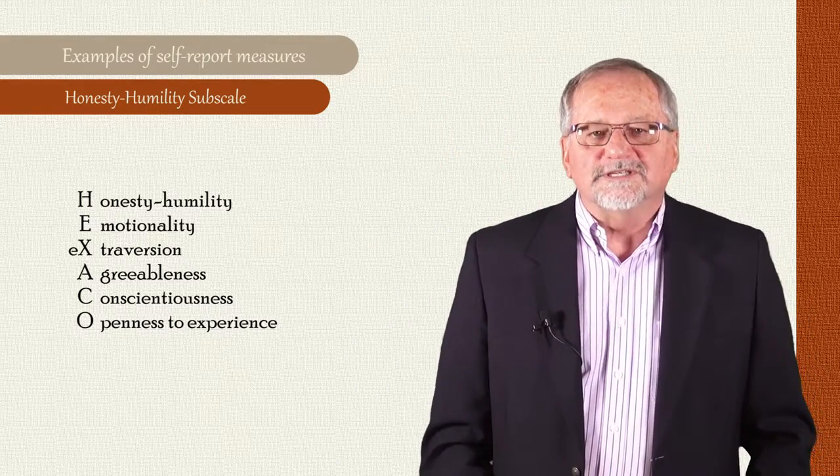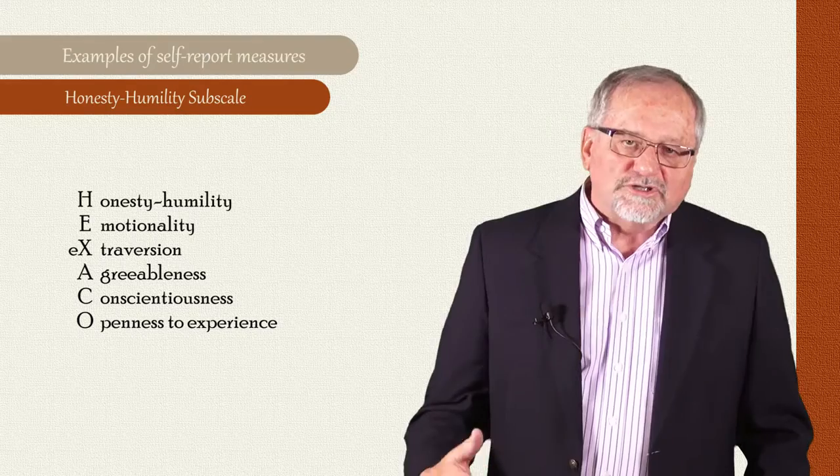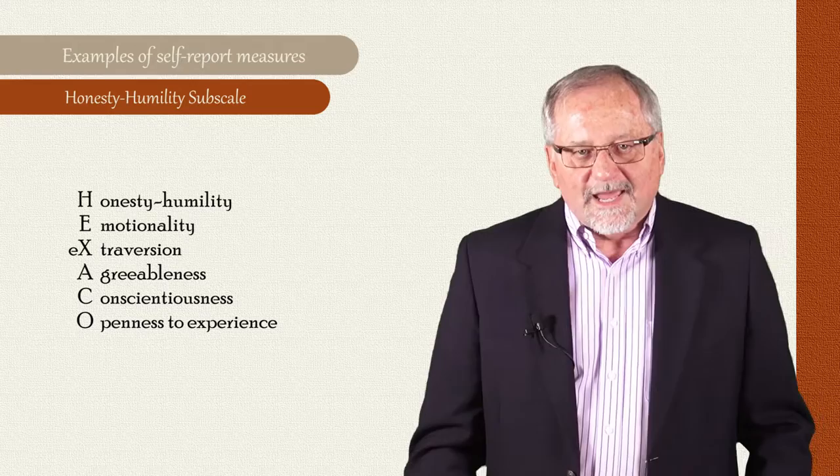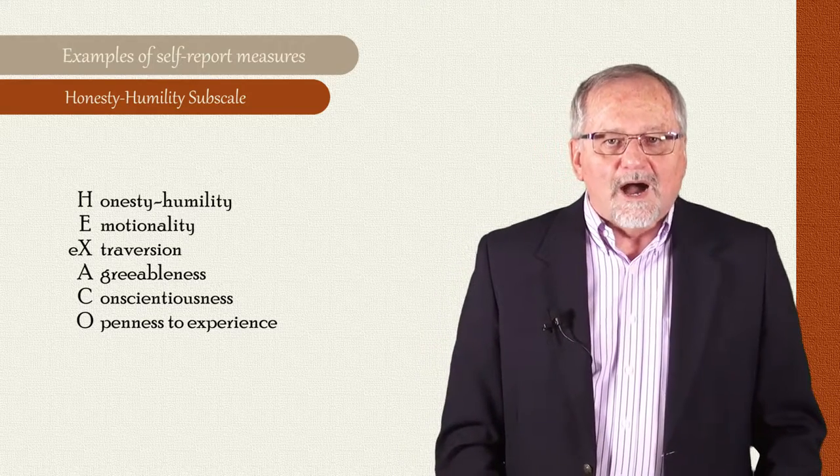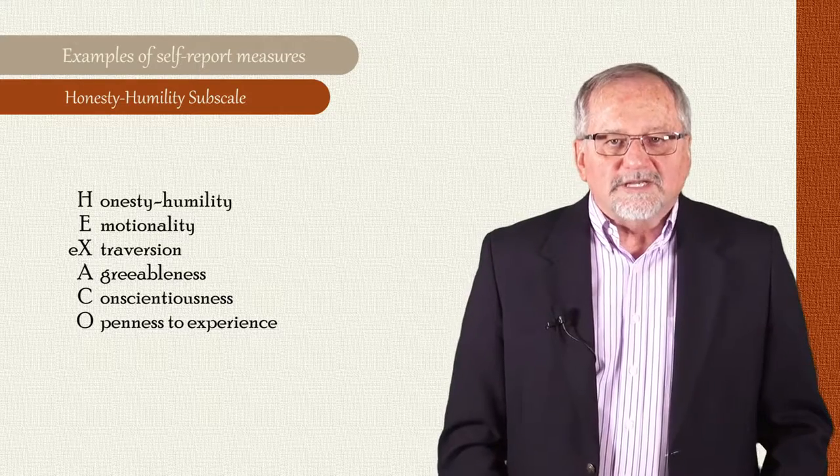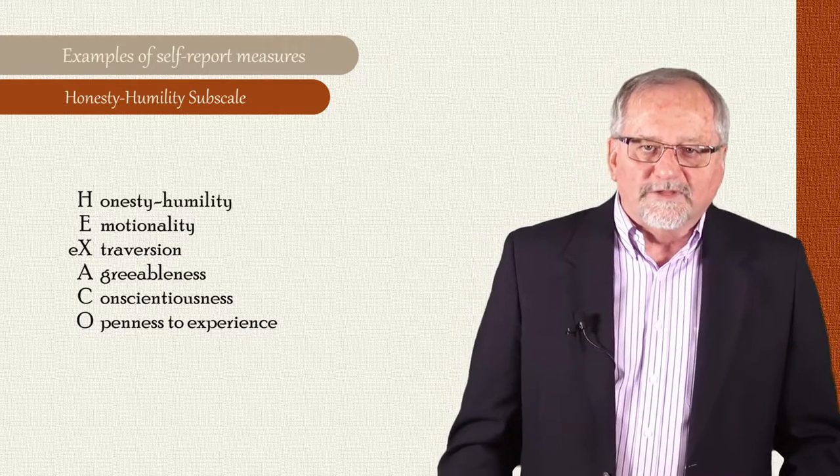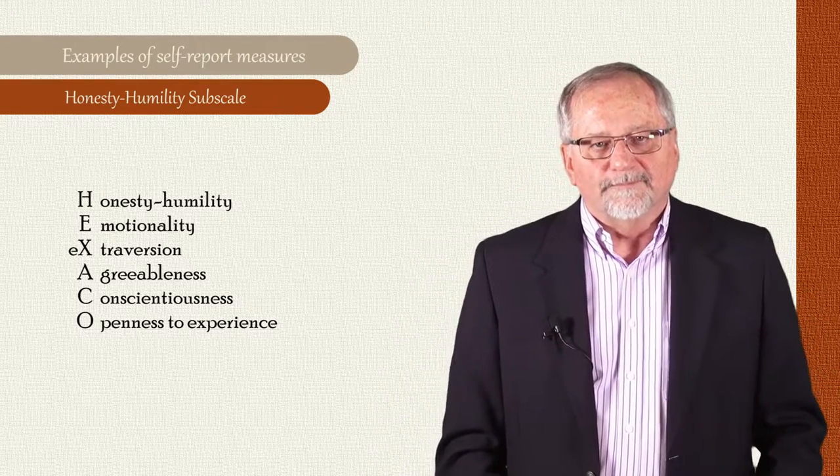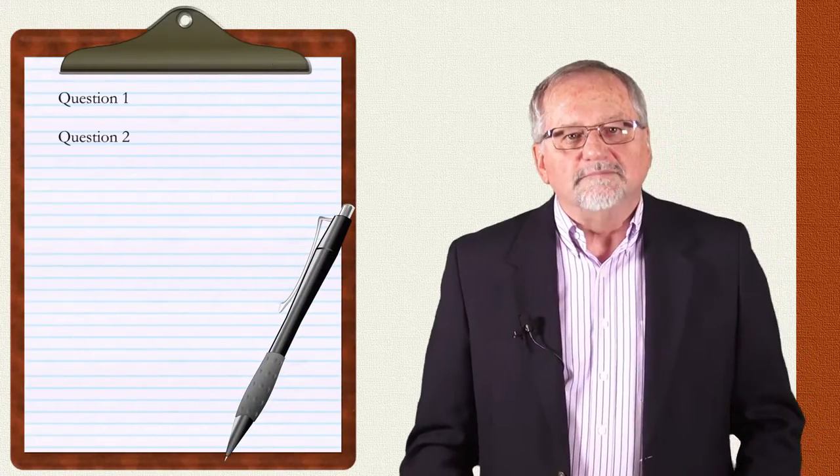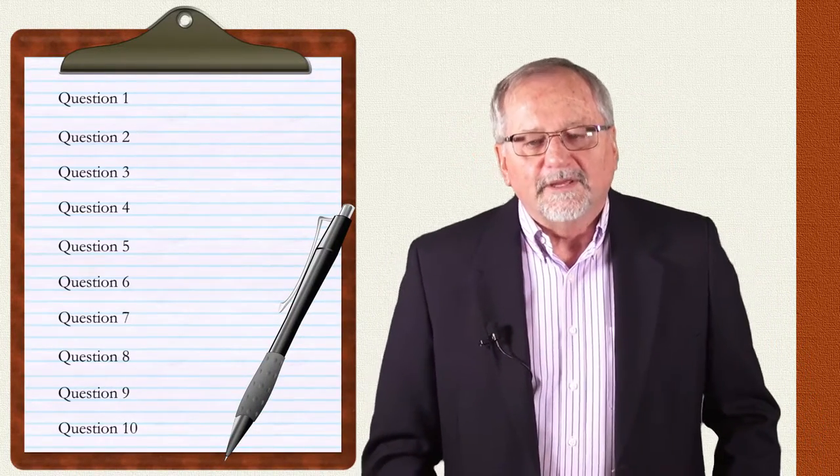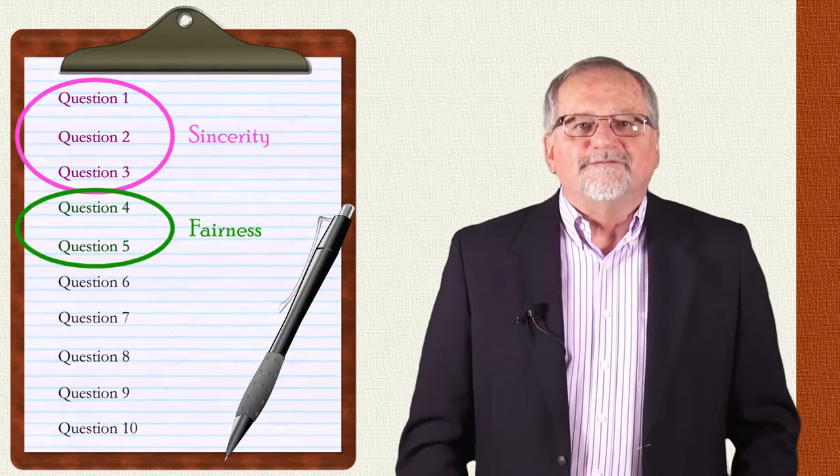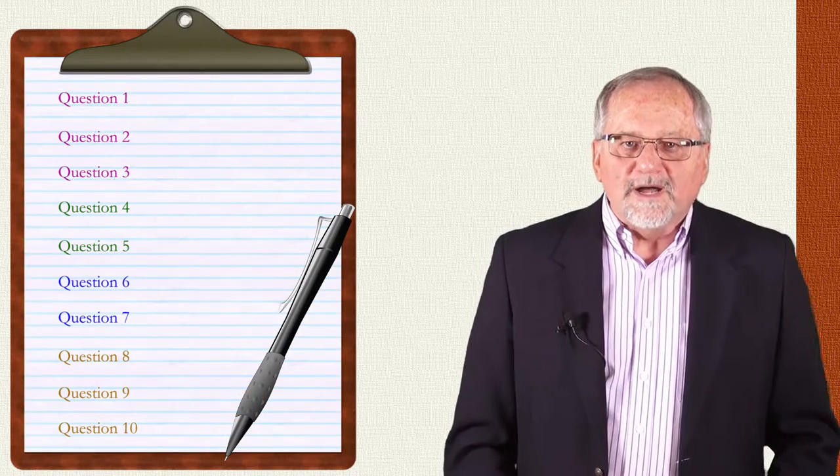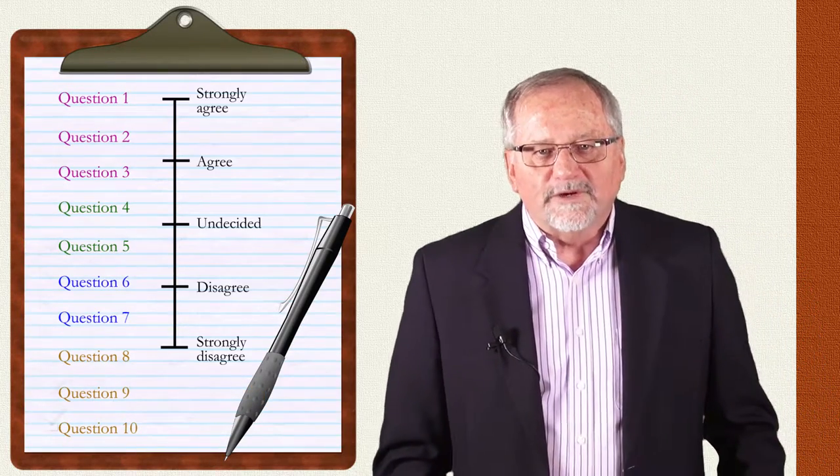Now the word HEXACO is an acronym where each letter refers to some aspect of personality, and the H in HEXACO is the one that refers to honesty and humility. And the honesty-humility subscale of this personality inventory is among the first and most widely used measures of dispositional humility. It is a 10-item measure that consists of four components: sincerity, fairness, greed avoidance, and modesty.